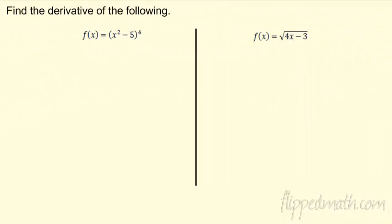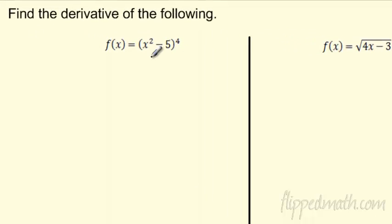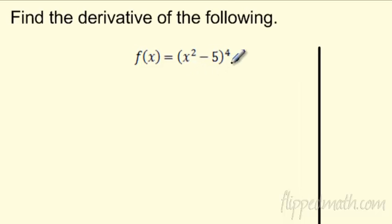Let's do some problems with it. It's kind of weird to look at the formal definition — we'll do more of that later. Let's just get good at the chain rule. I'm going to do the chain rule here, and this is very similar. I don't want to multiply this out: (x²-5)⁴. Can you imagine? That's going to take me 10 minutes. I'm not going to do that — chain rule.